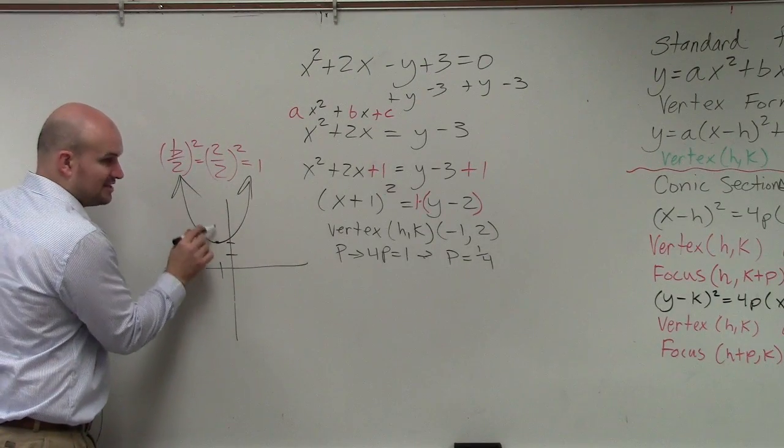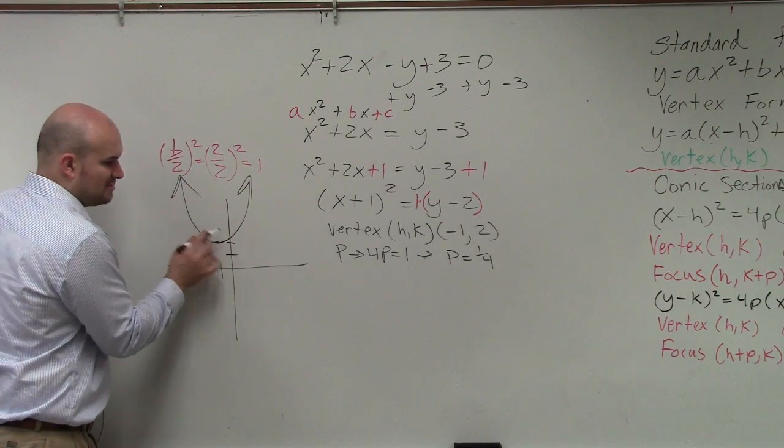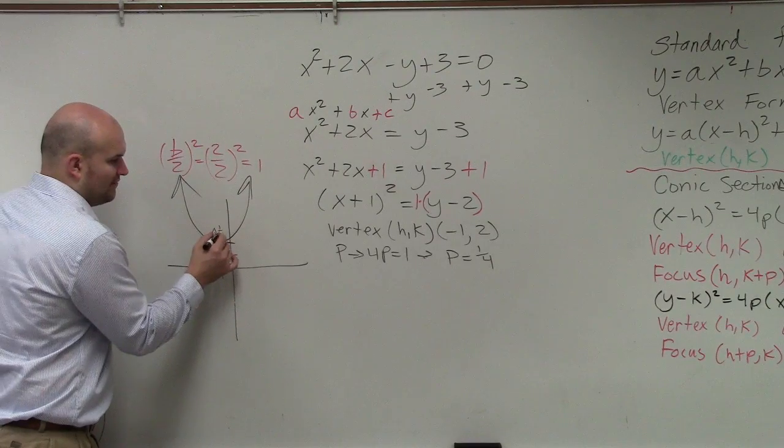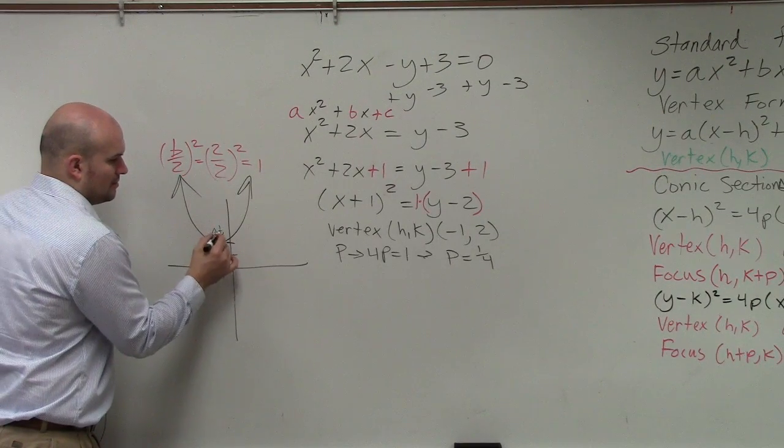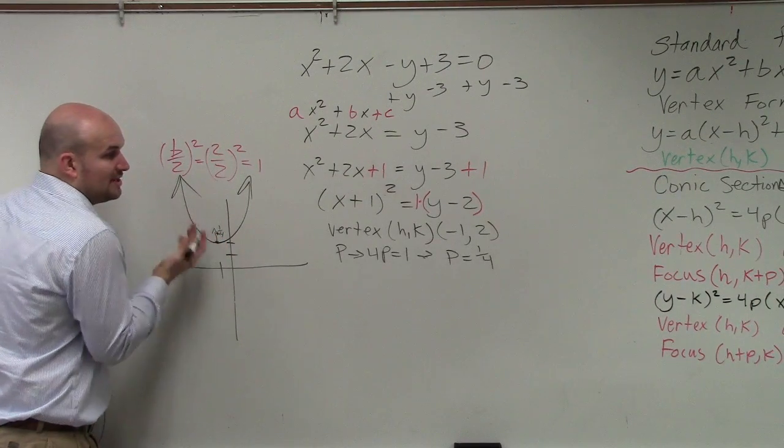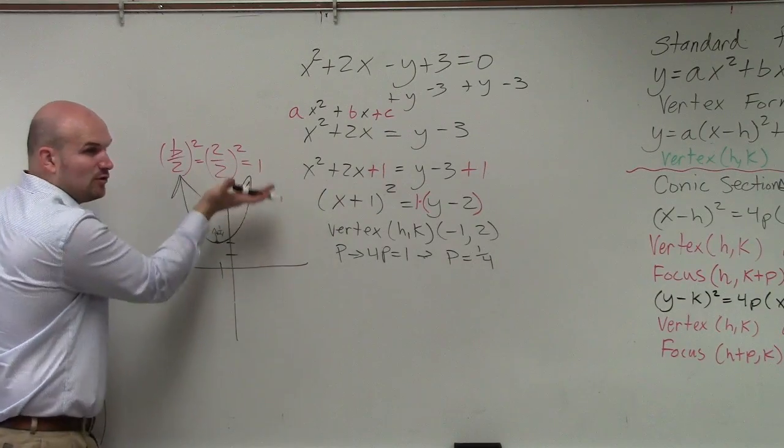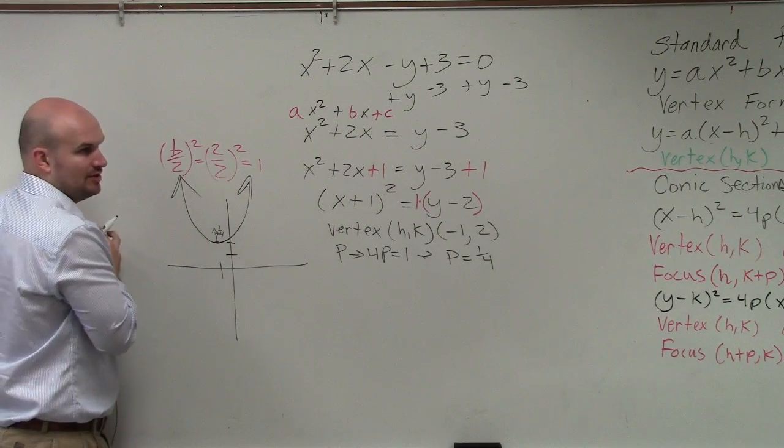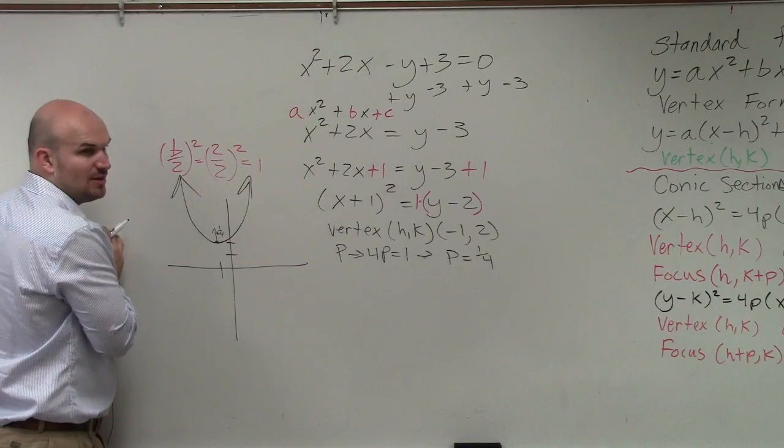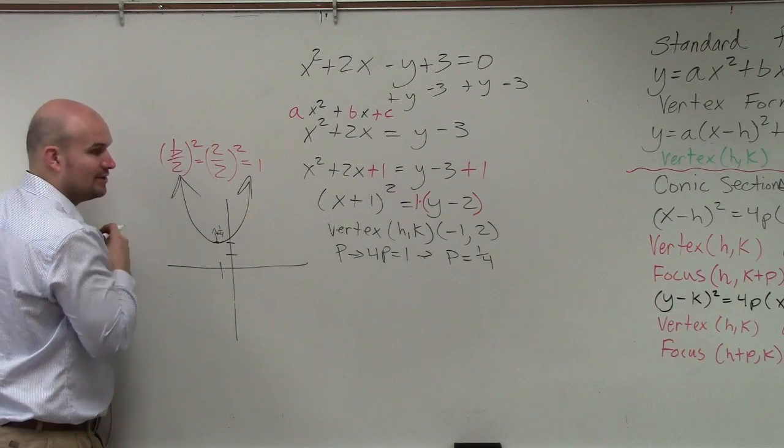So the distance from my vertex to my focus is 1 fourth, right? So all I'm going to do is take my vertex, but then add 1 fourth. Well, I'm adding 1 fourth to which coordinate? The x or the y coordinate? The y coordinate, right?